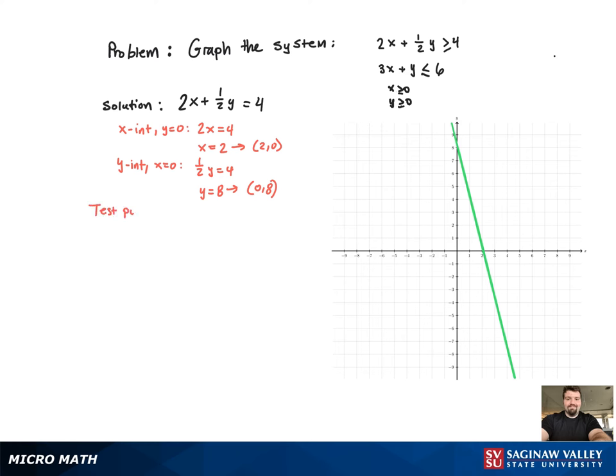Now since it's an inequality, we need a test point. We're going to choose arbitrarily (0, 0). And when we plug that into the inequality, we get 0 greater than or equal to 4, which is false. 0 is not greater than or equal to 4, so we're going to shade the region that does not contain (0, 0), which is above the line.